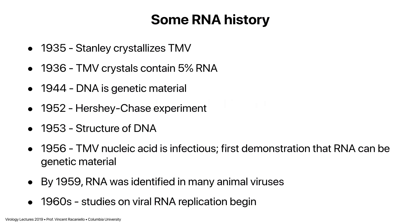To put this in perspective, let me give you a little history of RNA. Tobacco mosaic virus was first crystallized in 1935 — that was the first virus discovered at the end of the 1800s, and a lot of people began working on it as a model system. It was easy to grow a lot of it. So in 1935, crystals were grown by Wendell Stanley. At the time, we couldn't solve structures by x-ray crystallography — they were too big and we didn't have the computational power. But in 1936, those crystals were found to contain about 5% RNA, and no one at the time knew what that meant.